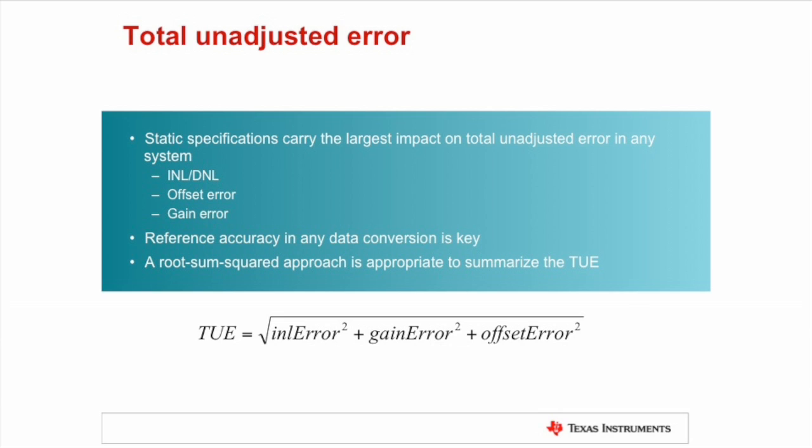In many cases, these values will dominate the total error of the system as filtering is typically in place to remove noise later in the signal chain. The reference voltage, of course, plays a tremendous role in determining overall system accuracy, but for this generic case, we'll only focus on errors intrinsic to the DAC.